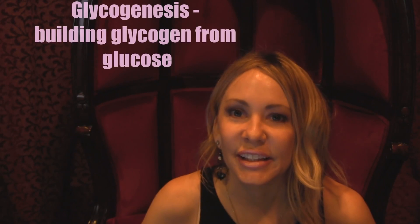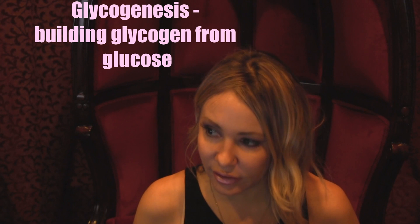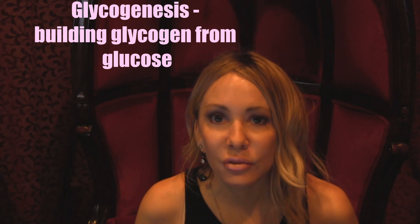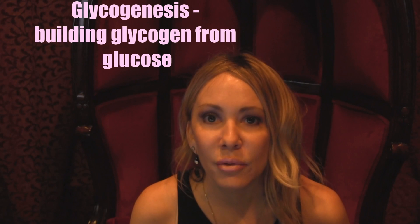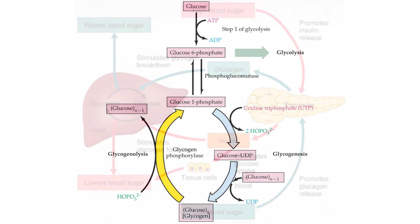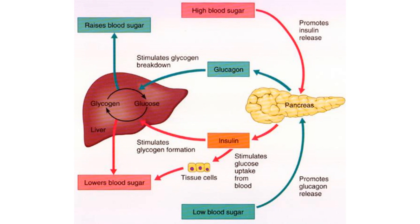Hi, it's Dr. Blossman again. I will be talking about a pathway known as glycogenesis. This pathway is building that highly branched molecule of glycogen. This is stimulated from insulin, which is a hormone secreted from the endocrine cells of the pancreas.